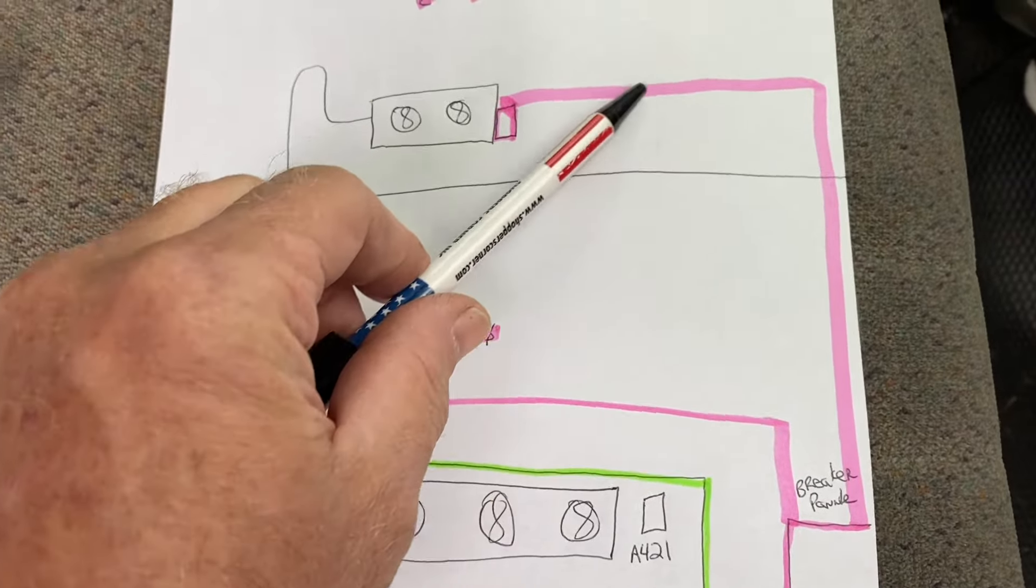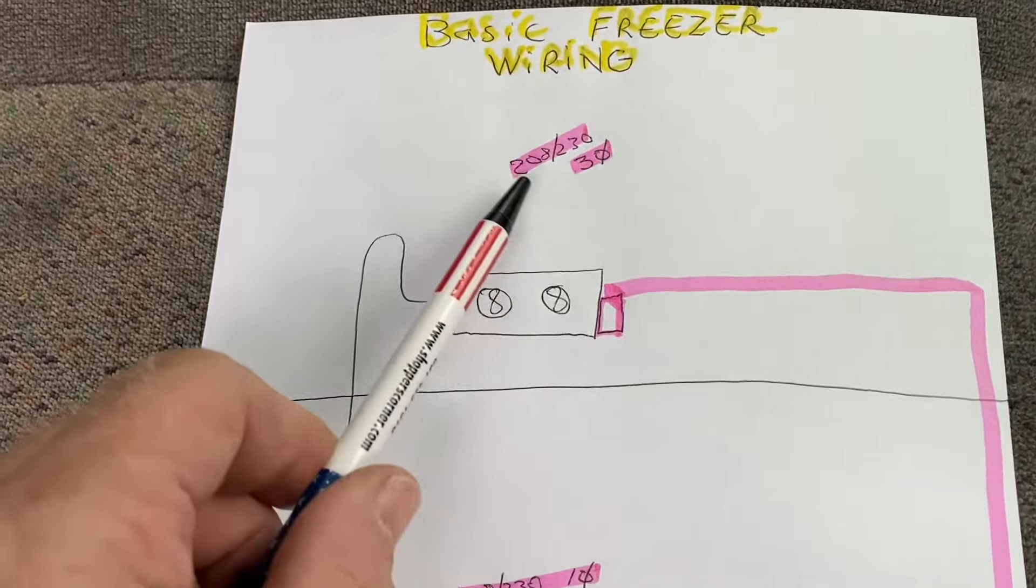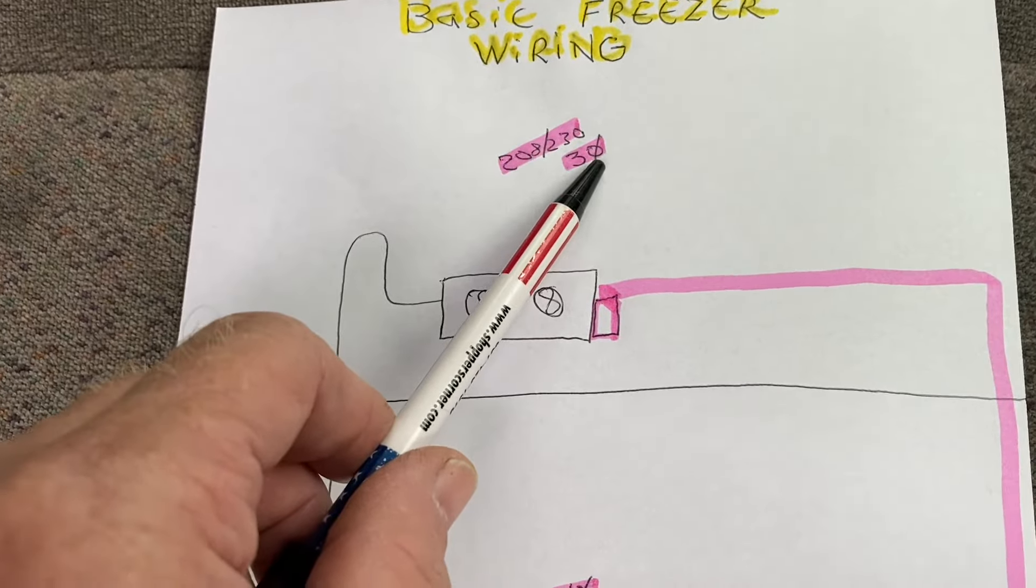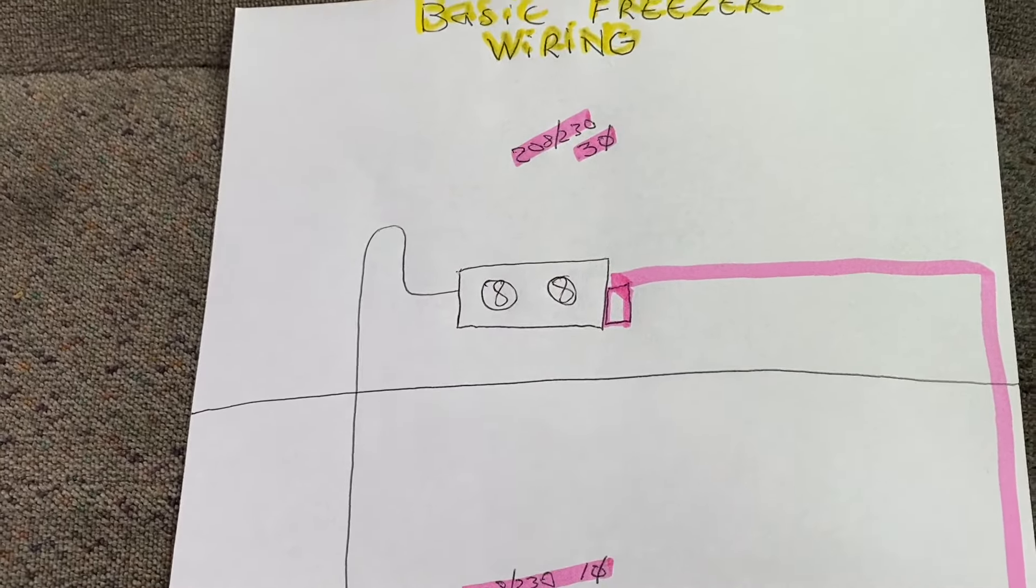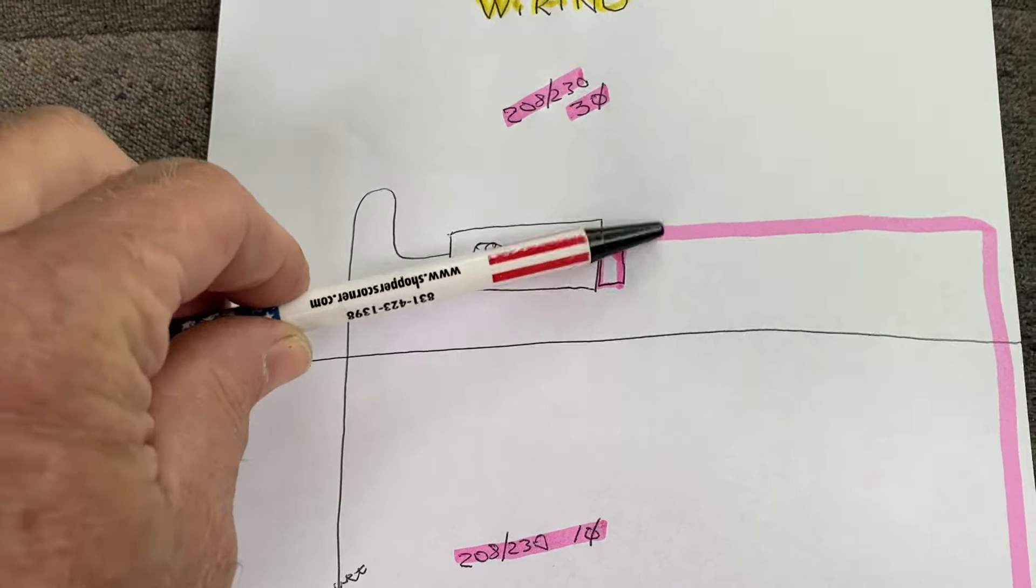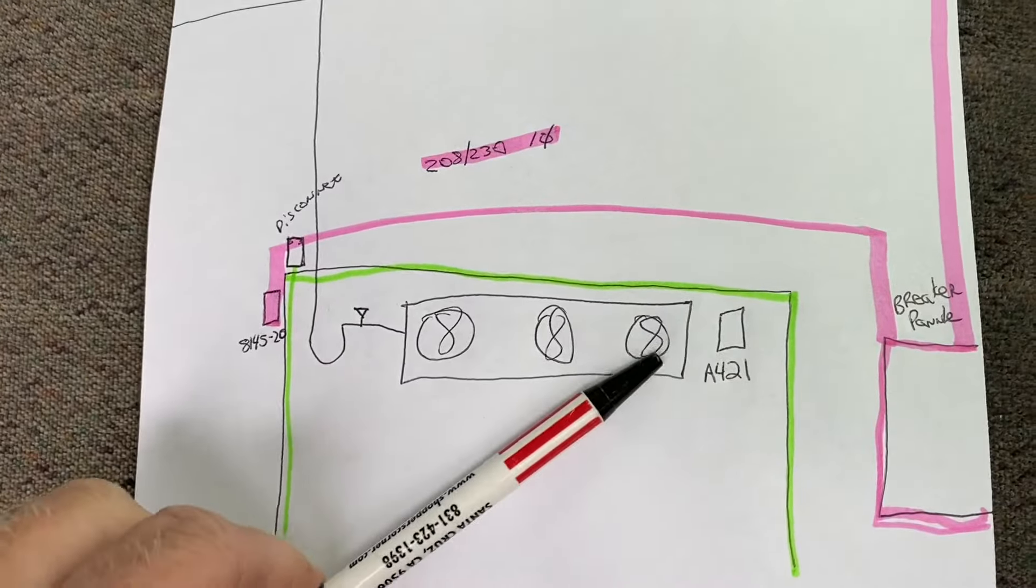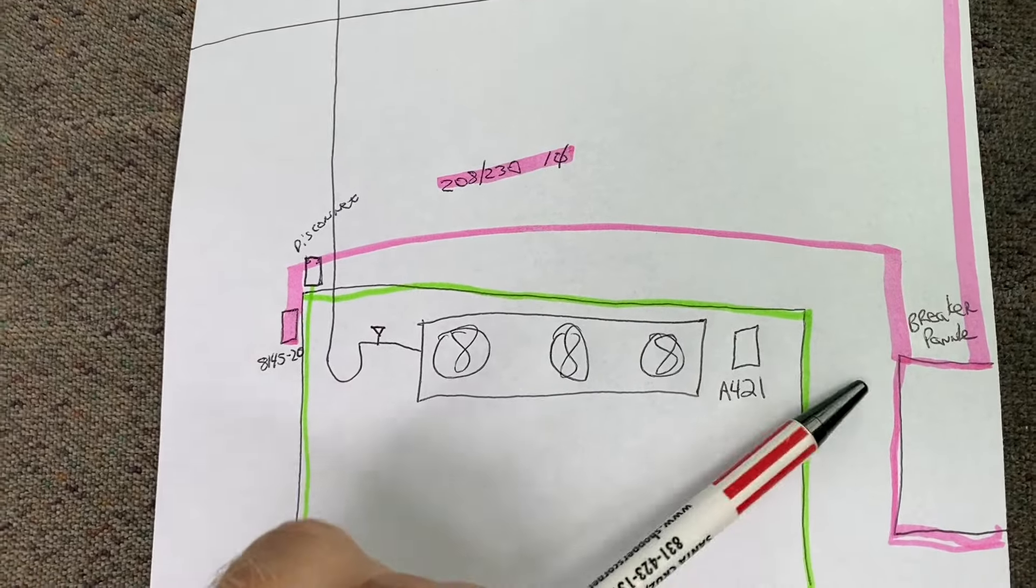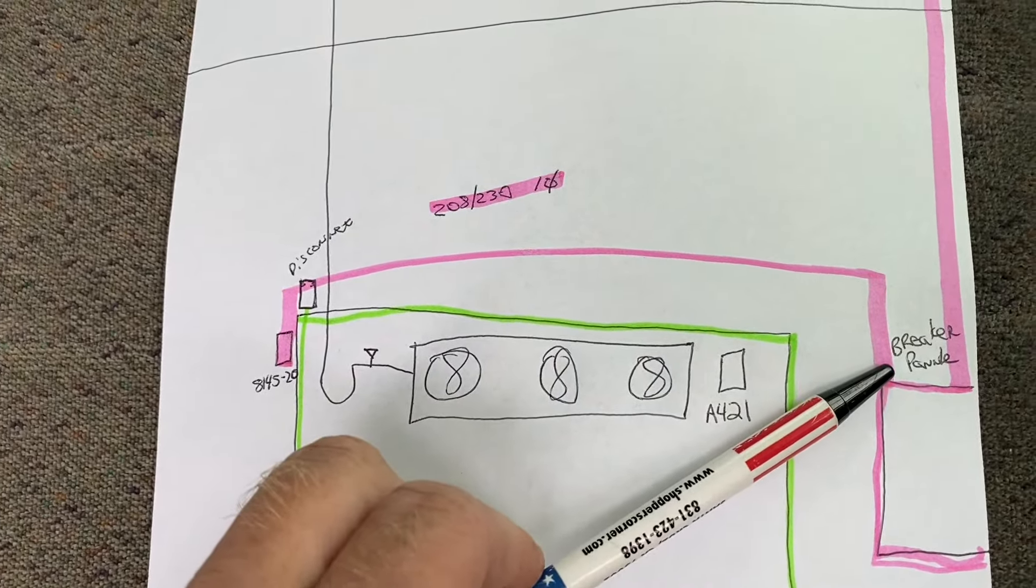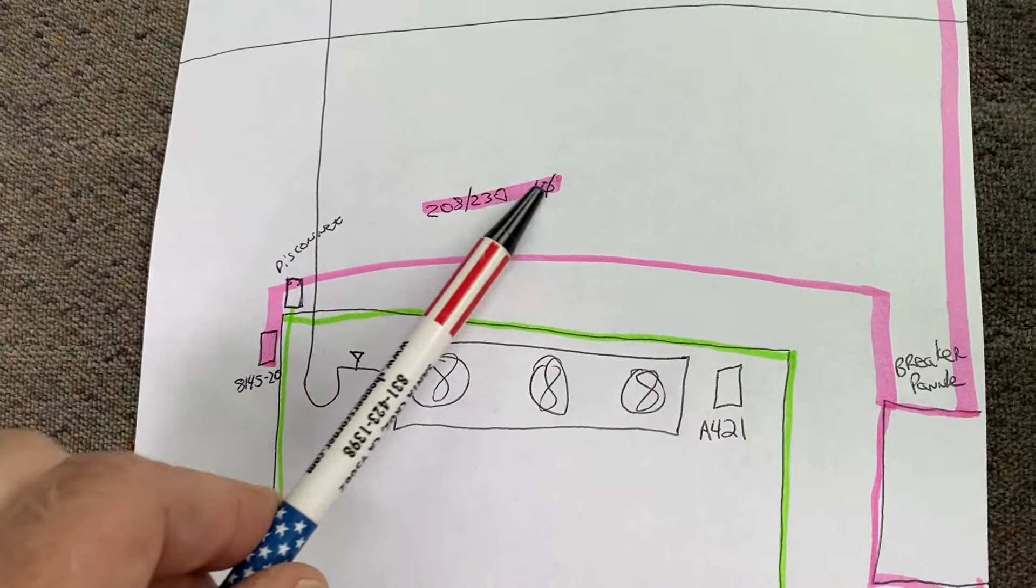In an ideal world, we'll take a breaker up to our disconnect for our condensing unit, three-phase, 208-230 three-phase in this scenario. Let's say the building has three-phase power. We want to use three-phase power for energy consumption. Here's our evaporator coil in our walk-in box.